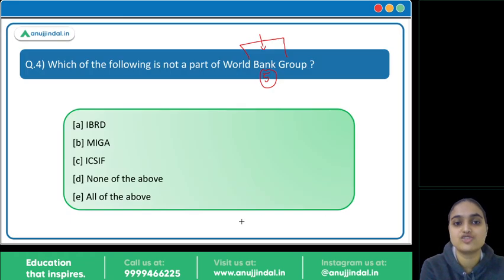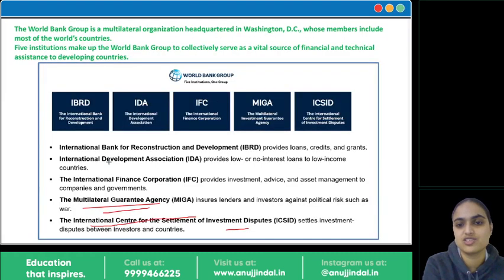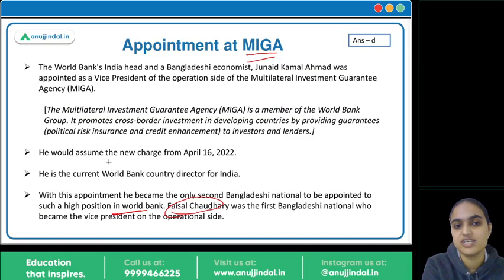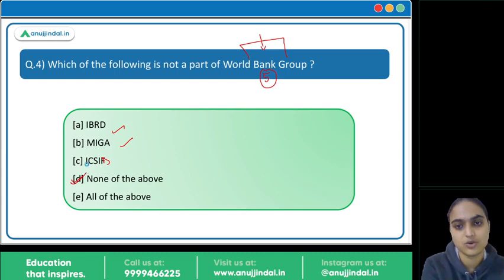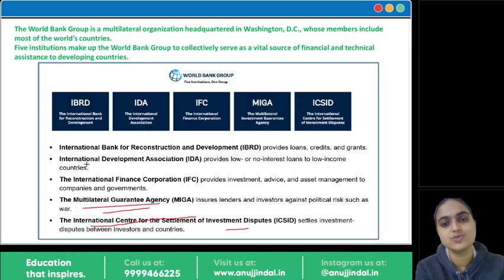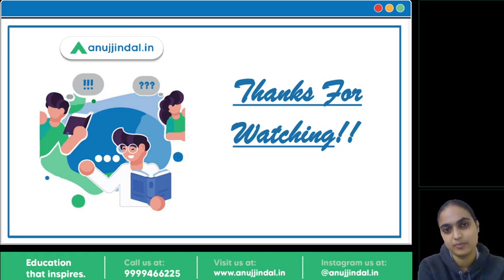Coming back to our question: which of these is not part of the World Bank Group? IBRD, MIGA — and it's not EXIM but ICSID. All of these we have just discussed are part of the World Bank Group. So the answer is option D: none of the above is not a part. That was all for today's session. I hope it was useful for you all. Thank you so much.